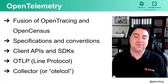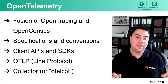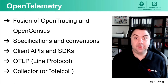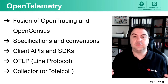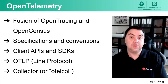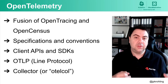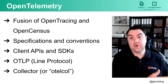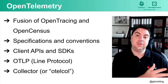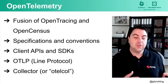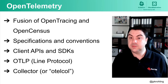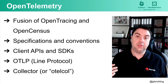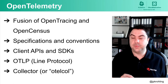OpenTelemetry is a project created with the fusion of OpenTracing and OpenCensus. It is composed of two big parts. The first is the specification and conventions part, where the community determines the semantic conventions for instrumenting applications. It also defines specifications for telemetry data types like traces, metrics, and logs. There's a group taking care of client APIs and instrumentation SDKs, and a group making definitions about OTLP.